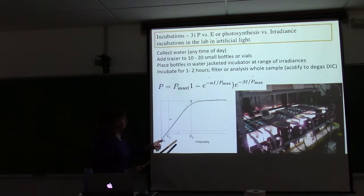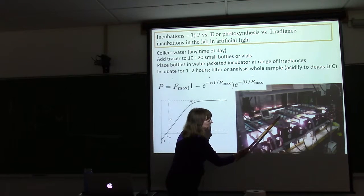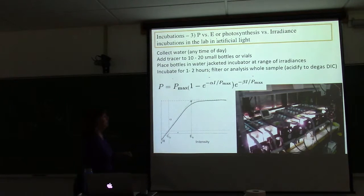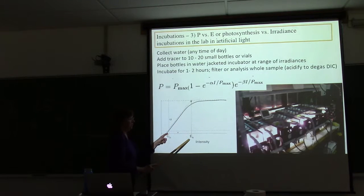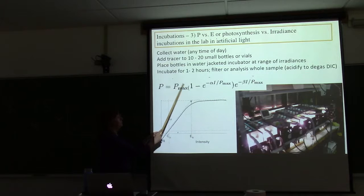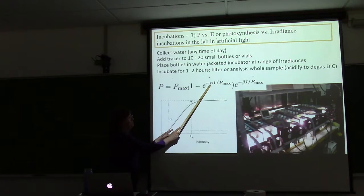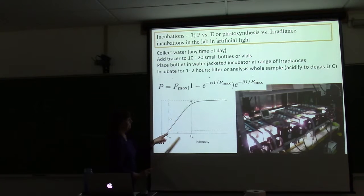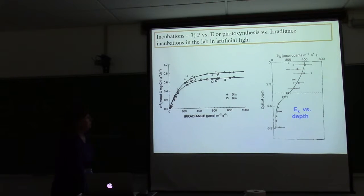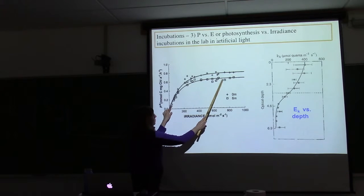The third type of C14 measurement people do, these are photosynthetrons, and they put small vials in a light gradient. This is a farm of P versus E incubators. The idea is to be able to get data points at a variety of light intensities for the light limiting part and for the light saturating part, so that they can use this to model using P max, the slope, and the measured light intensity. So that's a common method. This is just an example of the type of data that is derived from one of those incubators.